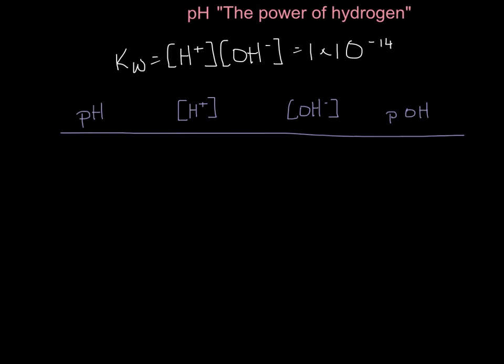Remember from our last video that KW equals the concentration of hydrogen ions times the concentration of hydroxide ions, and is always going to be equal to 1 times 10 to the negative 14. This tells us that the concentration of hydrogen ions in a solution multiplied by the concentration of hydroxide ions is always going to equal 1 times 10 to the negative 14.